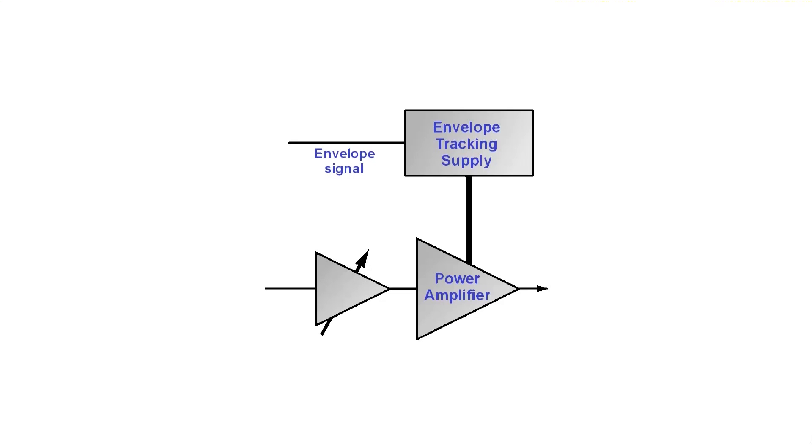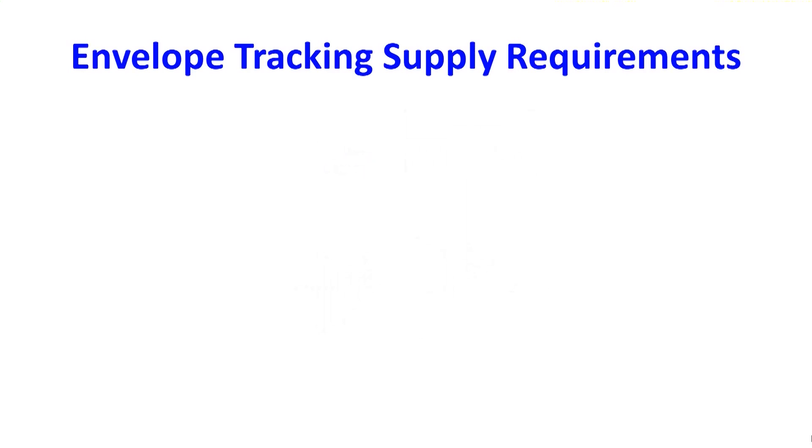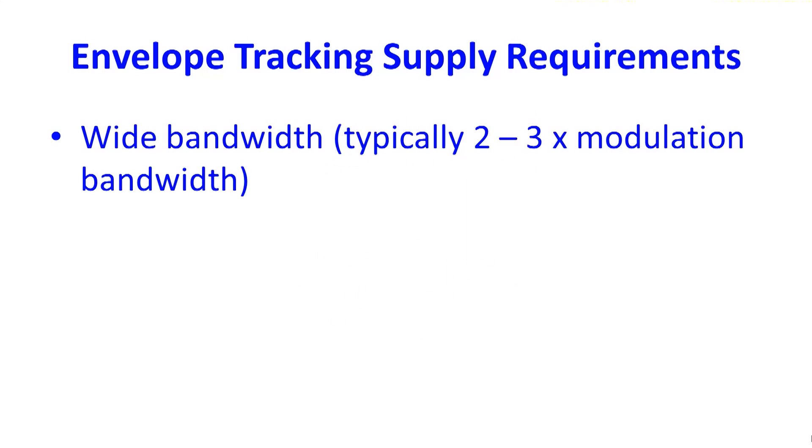So what about the envelope tracking power supply? This has some key requirements. First, it must have a very wide bandwidth. It must be able to track the RF envelope. Typically, the bandwidth of the supply should be around two to three times the bandwidth of the modulation. This means that a 4G LTE system can require a bandwidth of around 50 MHz.